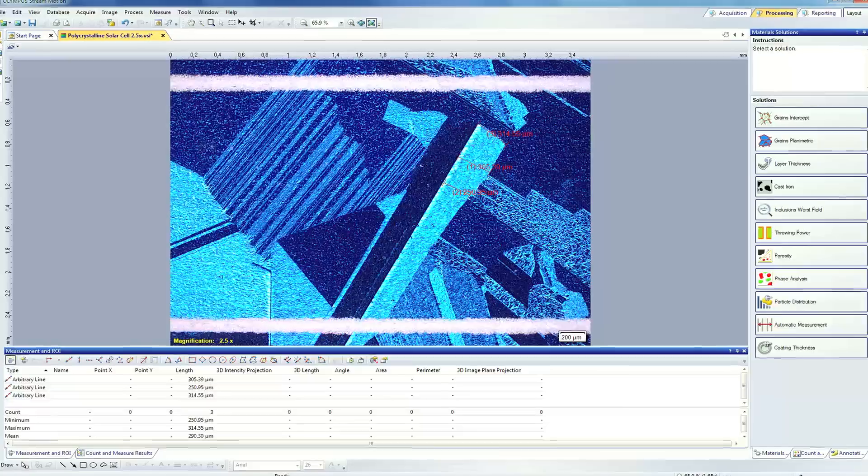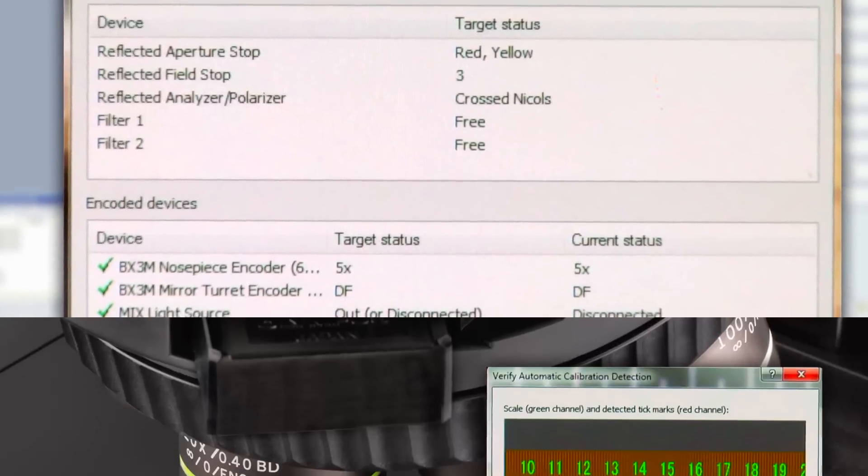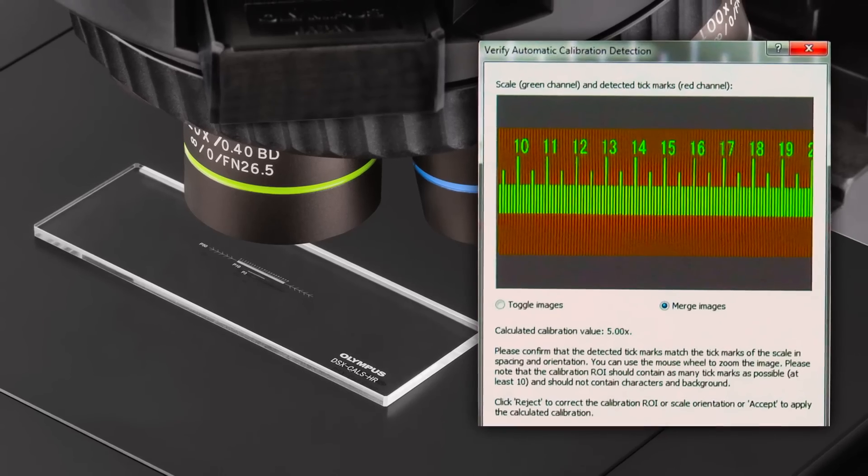New functions in Olympus Stream have improved overall reproducibility and ease of use, such as restore device status and our auto calibration feature.